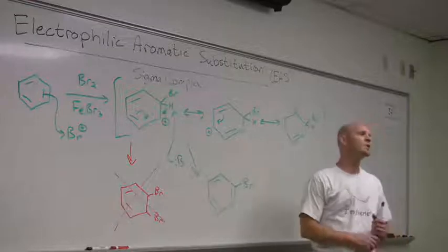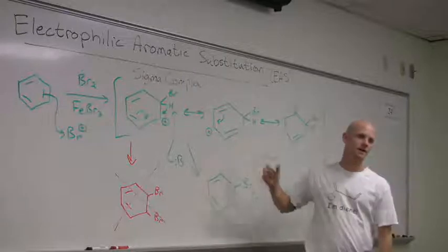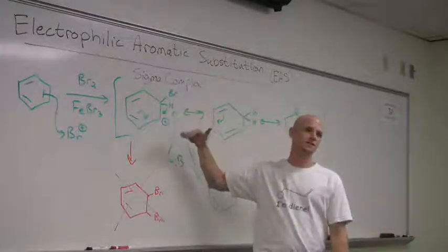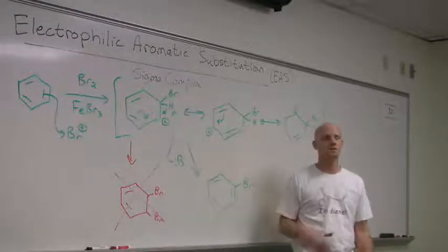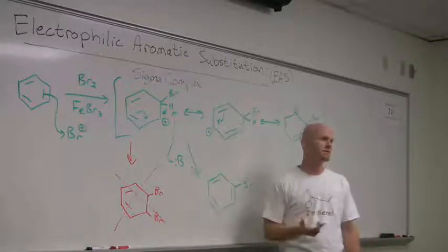And if we stabilize the intermediate, we'll have a lower activation energy leading to it. The reaction goes faster. And so, in the context of EAS reactions, electron donating groups are activating groups. They make benzene react faster.